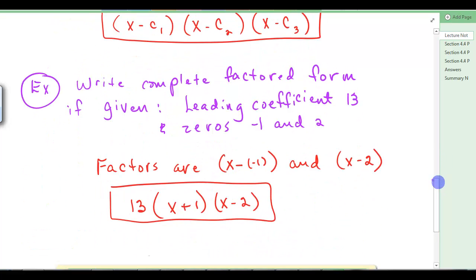So if we had to do this question, write the complete factored form if given the leading coefficient is 13, and the 0's are negative 1 and 2. Given this, the factors are x minus negative 1 and x minus 2. So when you write that, you'll have x plus 1 times x minus 2, and 13 goes in the front.